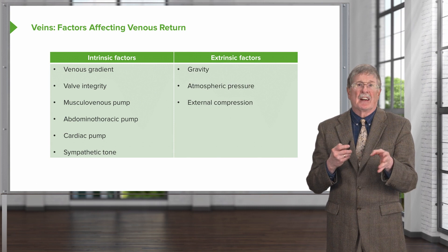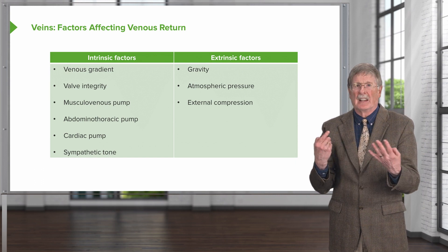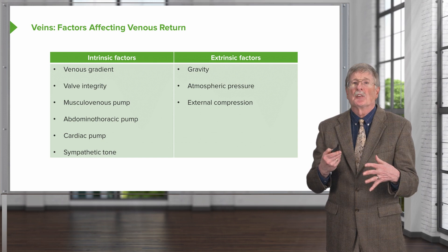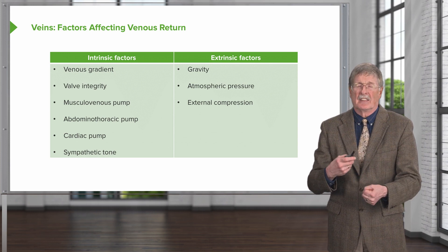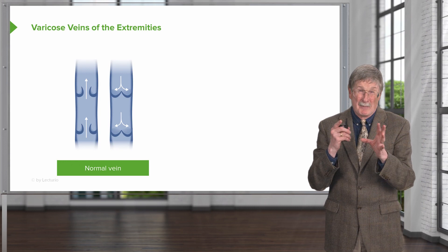There are also extrinsic factors. Gravity is one: standing here, there's 1G forcing blood to stay down. For most of us it's just fighting against 1G of gravity. There's atmospheric pressure, which also has an influence. And then external compression — if you're wearing a very tight garment, that's going to affect venous return as well.